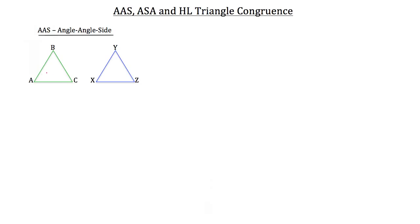For two triangles to be congruent using the angle angle side postulate, or AAS postulate, two of the angles in both triangles must be congruent to each other and one of their sides must be congruent. You'll notice in AAS that the S comes after the two A's, not between them, which means the side you're looking for in congruency should not be the side between those two angles.